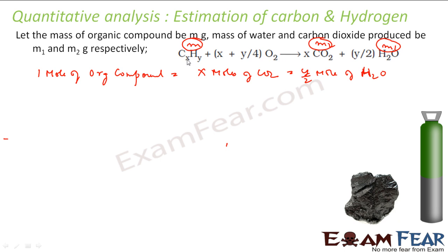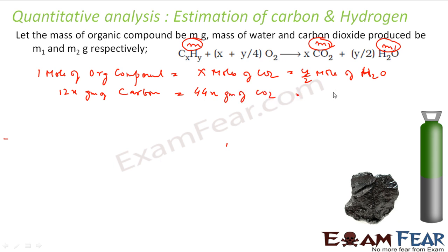So this one mole of organic compound has 12X gram of carbon. You can say that 12X gram of carbon will give X moles of carbon dioxide, meaning 44X gram of carbon dioxide. And water is 18, so Y/2 × 18 gives Y/2 × 18 gram of water.